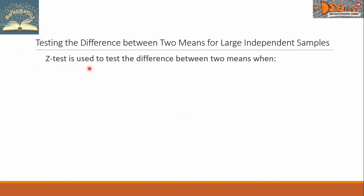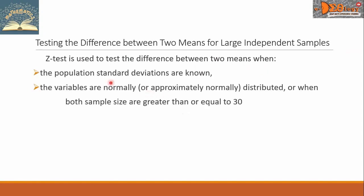Z-test is used to test the difference between two means when these two conditions are satisfied. Number one, the population standard deviations are known.